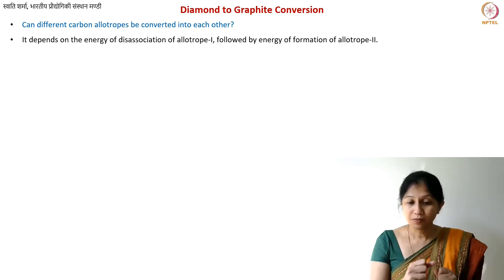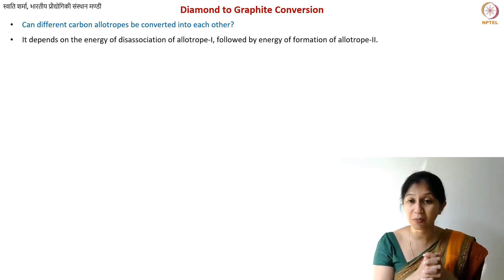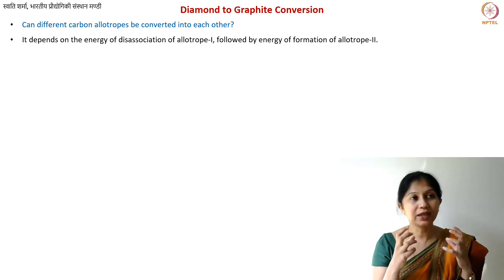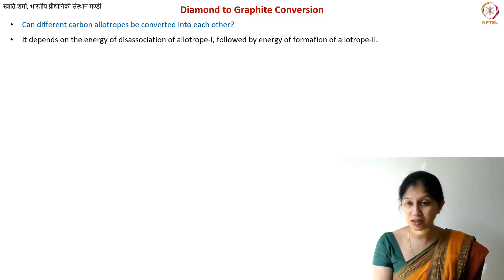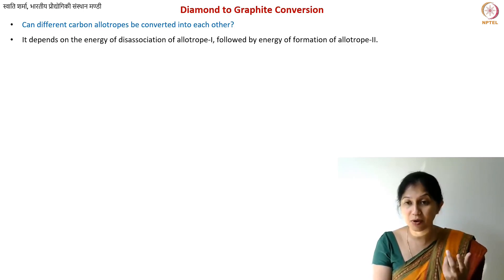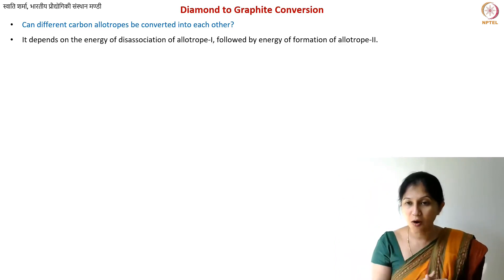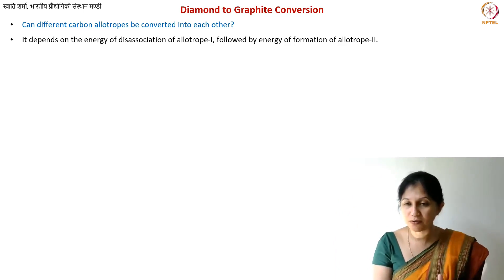We need to understand why these energies are required at all. First, you need to pull the atoms of diamond away from each other. Diamond is a very stable crystal structure — the hardest known material — with very strong bonding. You need to provide energy to the diamond crystal to dissociate it, to ensure the atoms are far away from each other. Only then will they form something else. That will be energy number one. Energy number two is the energy of formation of graphite — you take atoms at infinite distance and form one mole of a material.